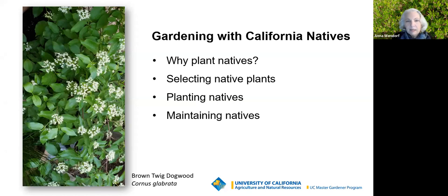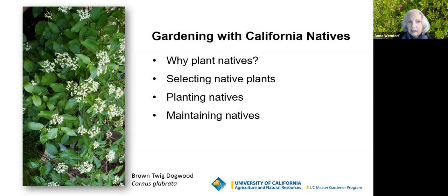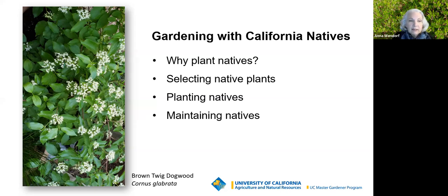Here are the topics we're going to cover: why it's important to plant native plants — and it's not just for fun, although that is a big part of it. We're going to talk about how to select native plants for your specific garden, about planting natives so that they have a really good start, and we'll touch on maintaining natives in your garden to help it look like a suburban or urban garden space rather than a wild thicket imported from a park. This is a brown twig dogwood growing in a pot — it's a great pollinator plant with beautiful flowers and leaves, and one of the few that will do very well in a pot.